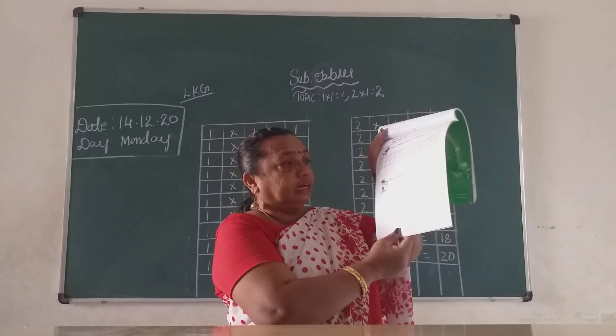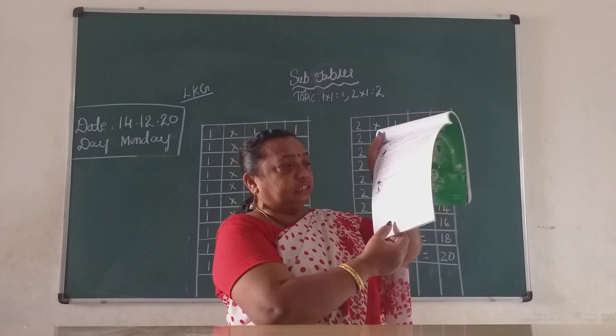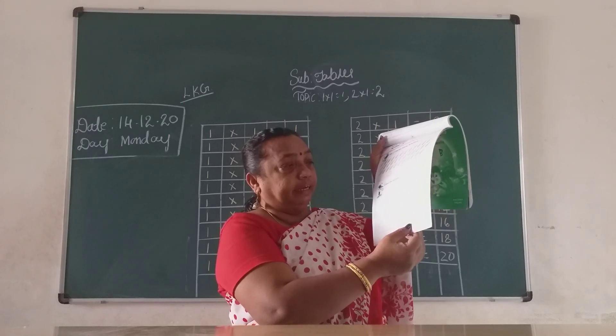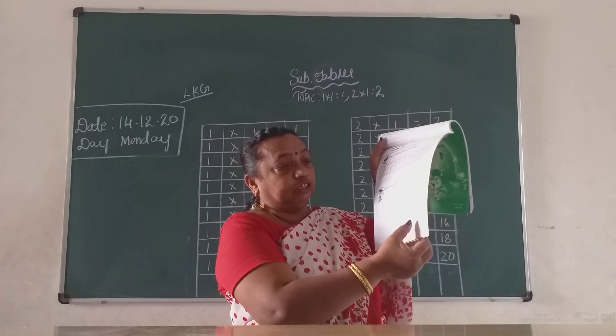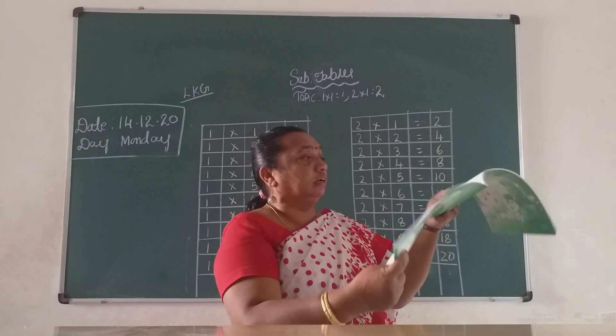Tick it, children. And colour the numbers — which number, children? This is one, eight — eighteen. Take out your colour pencil and you have to colour it, children.